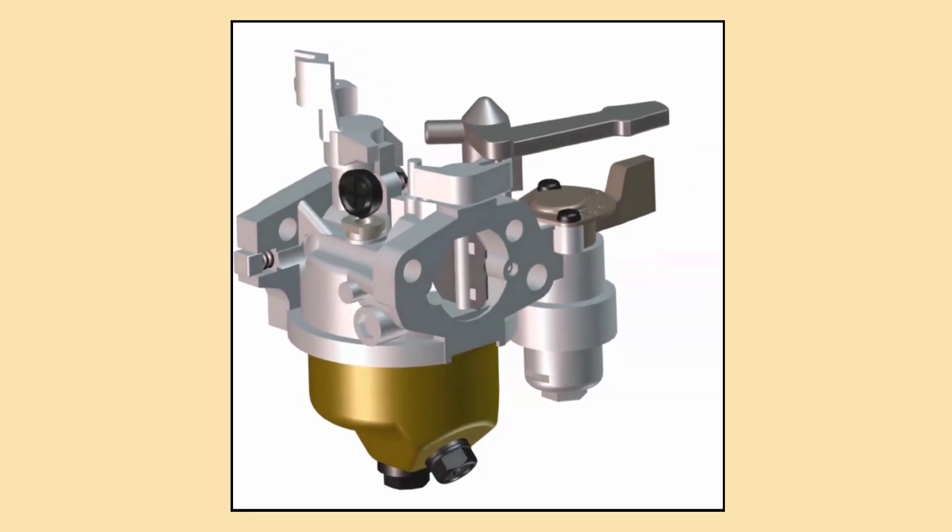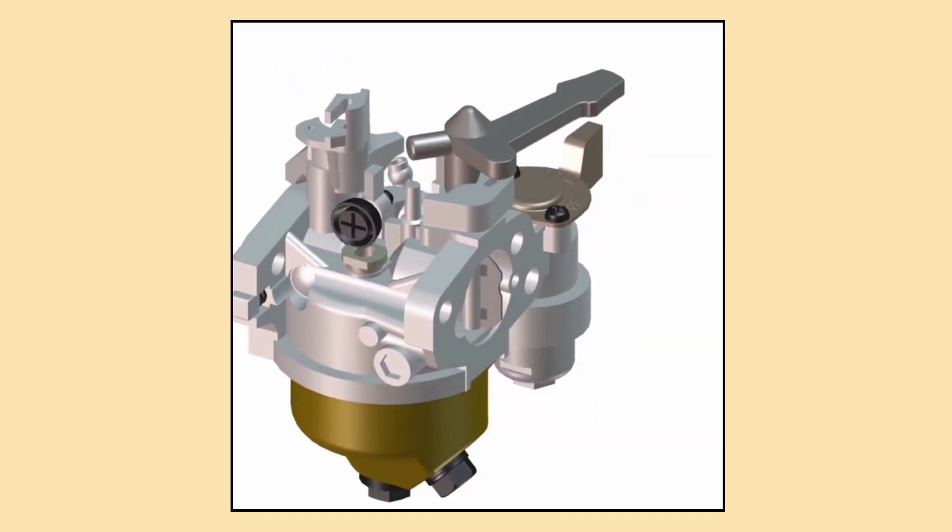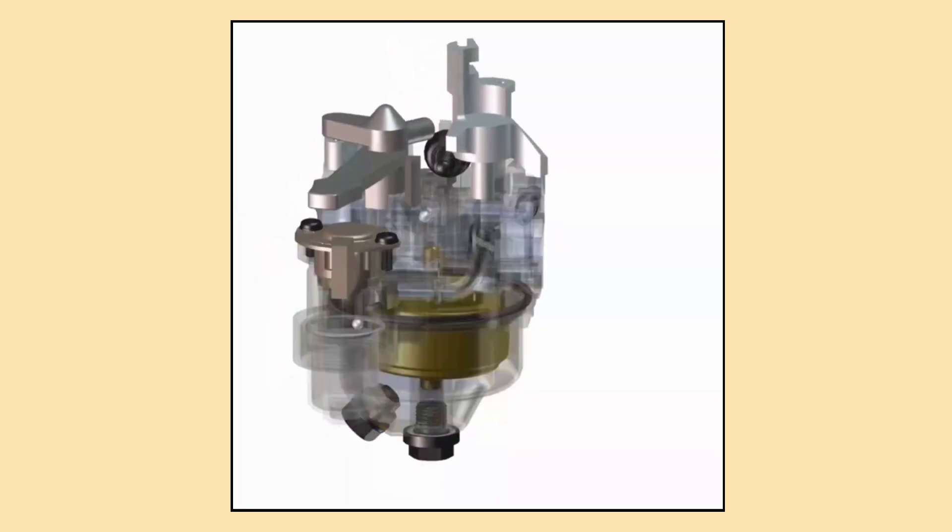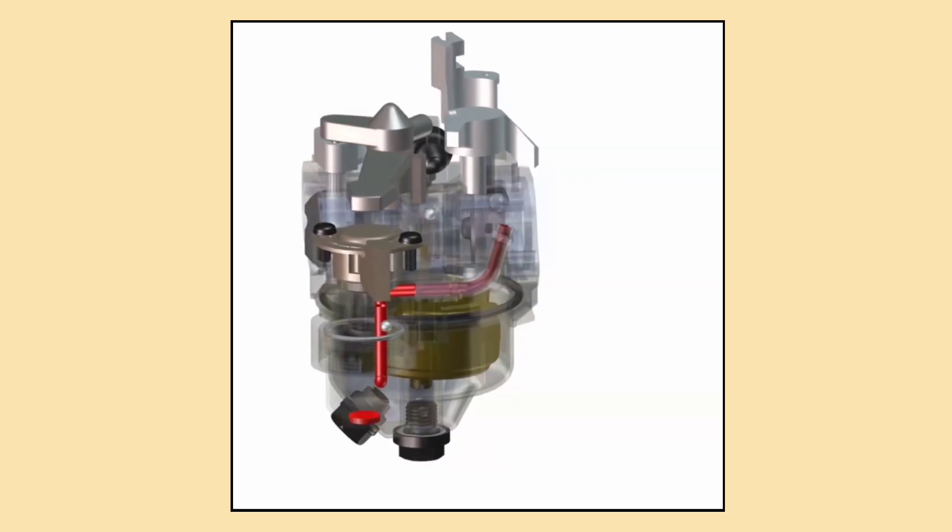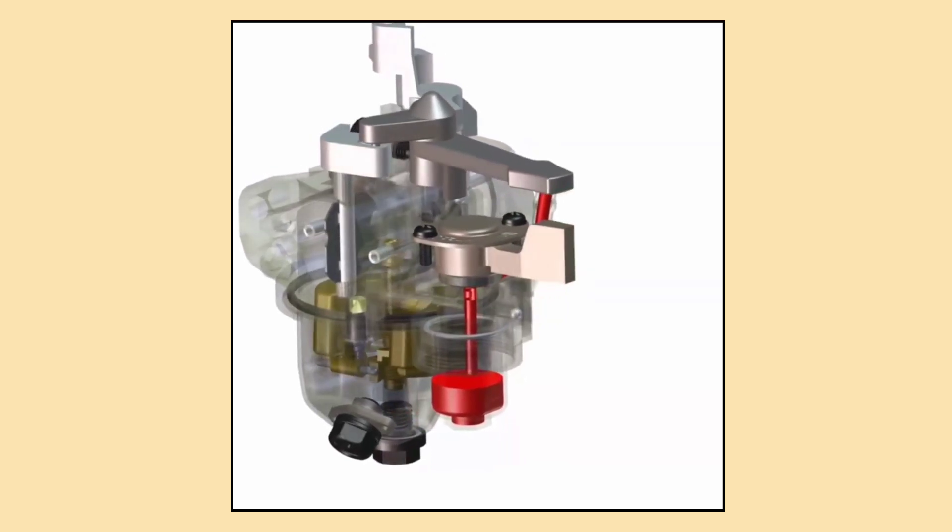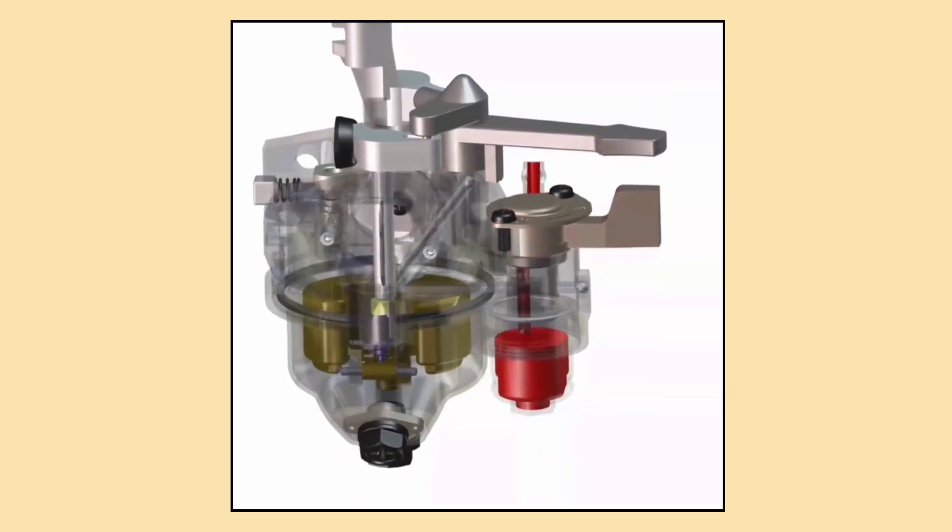While carburetors are relatively simple and reliable, they aren't very precise. This means that they can waste fuel because they can't adjust the air-fuel mixture as accurately as modern systems. As a result, older cars with carburetors tend to have lower fuel efficiency and higher emissions.